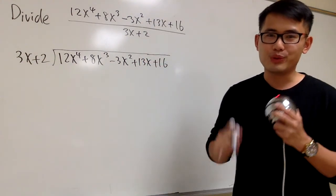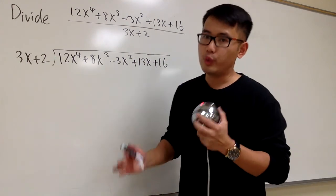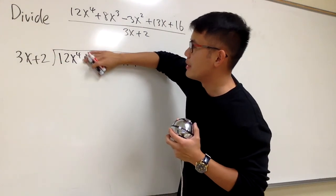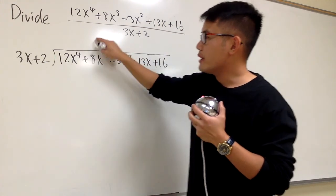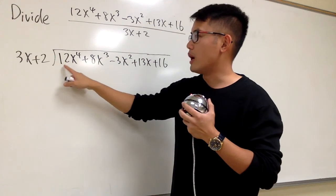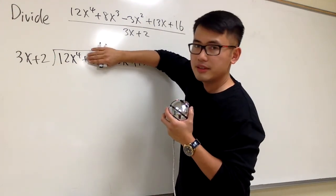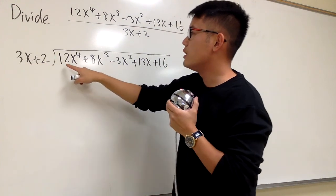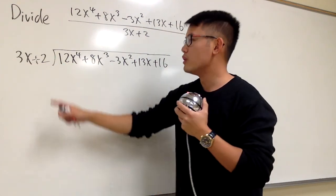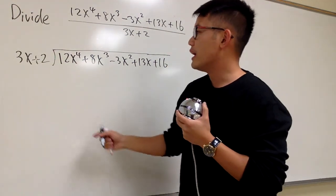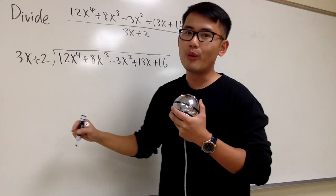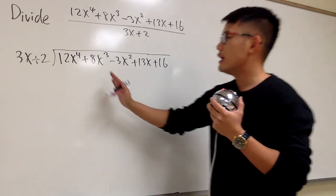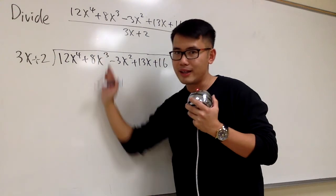Now this is how we are going to get to work. We are going to figure out what we need. The way to do that is you cover this up — just the first term — and you also cover this up — just the first term. You ask yourself: what times 3x will give you 12x to the 4th power? We know 4 times 3 gives me 12, and x to the 4th divided by x to the 1st gives x to the 3rd power. So I'm going to need 4x to the 3rd power, lined up in the x to the 3rd power column.